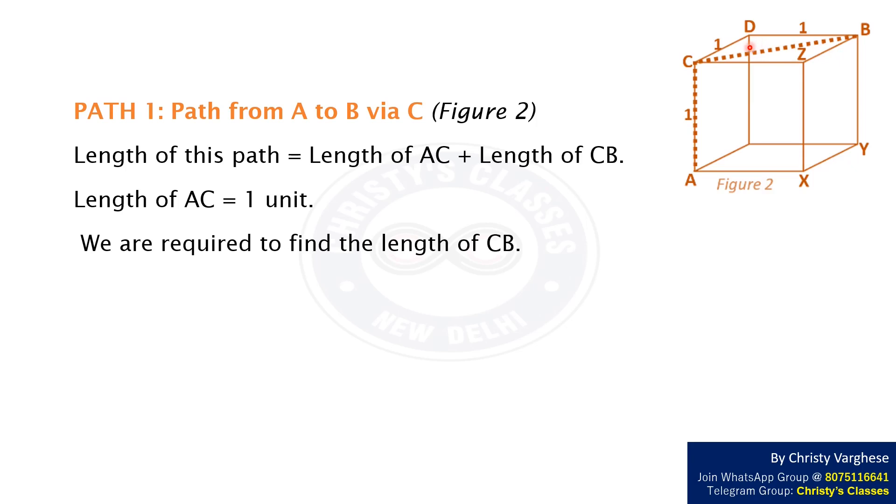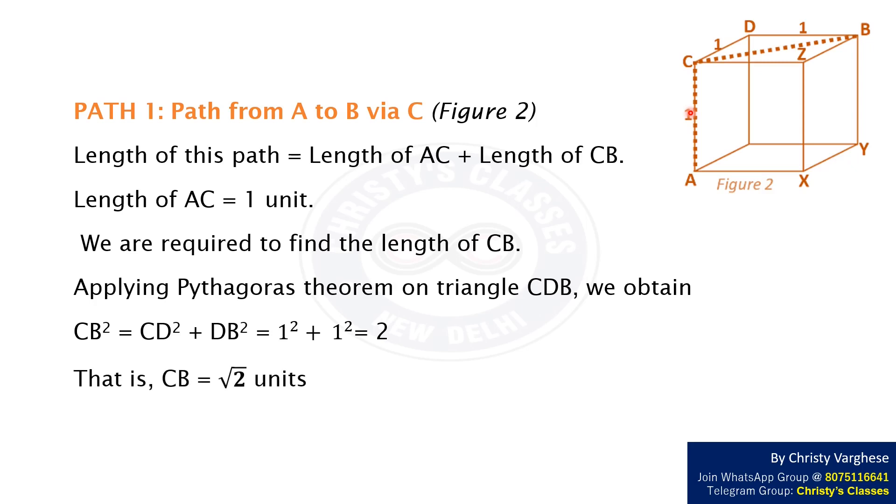By applying Pythagoras theorem on triangle CDB we obtain CB² = CD² + DB², that is 1² + 1² which equals 2. That is CB = √2 units. Hence the length of this path equals 1 + √2.